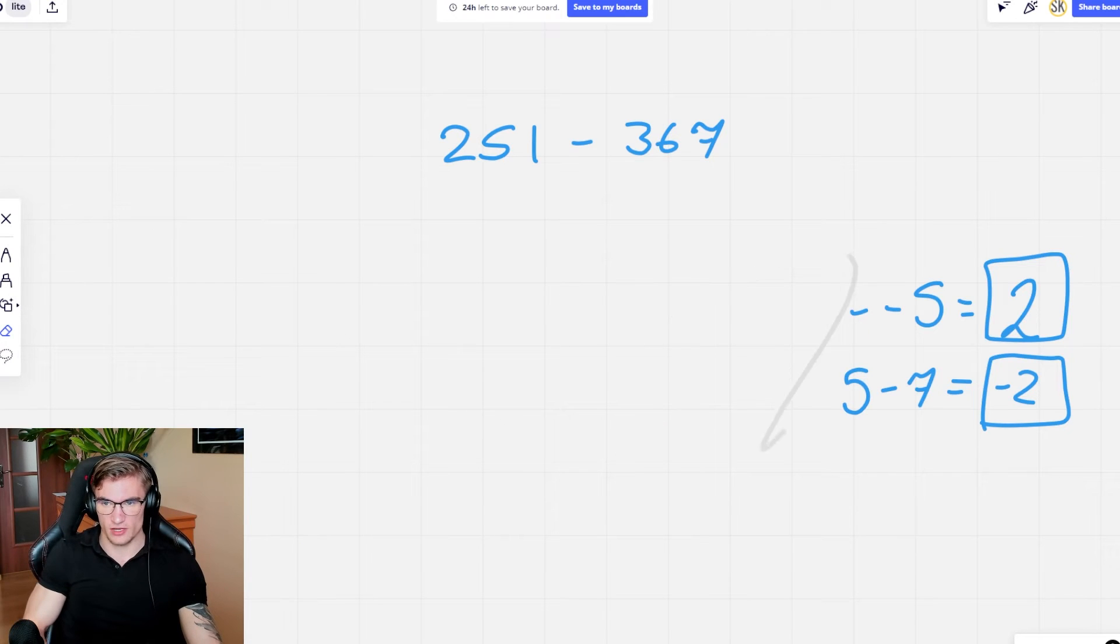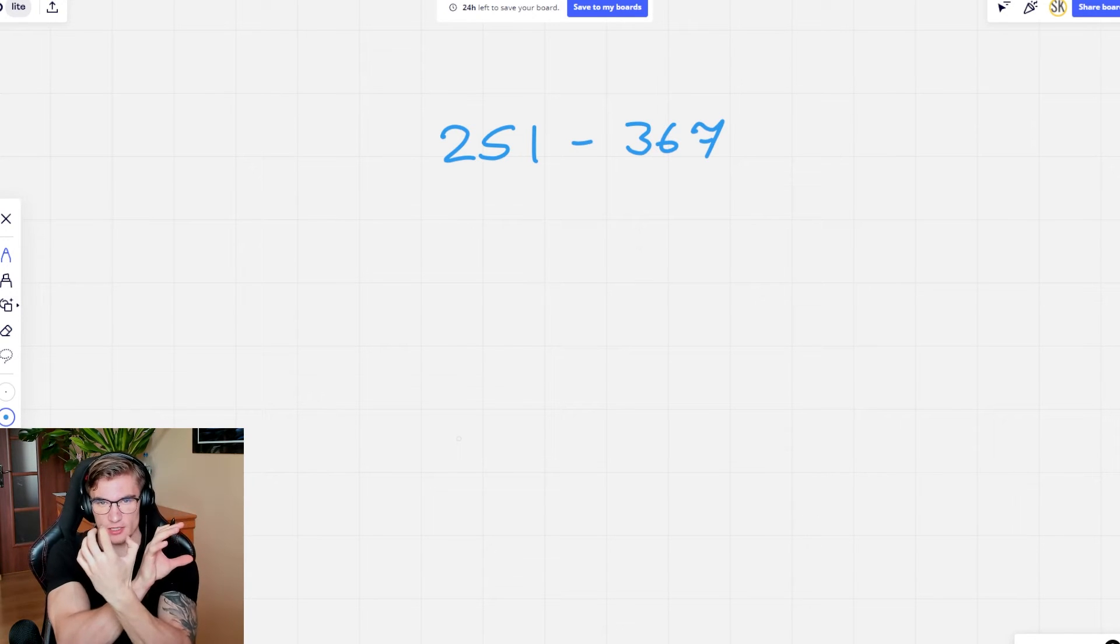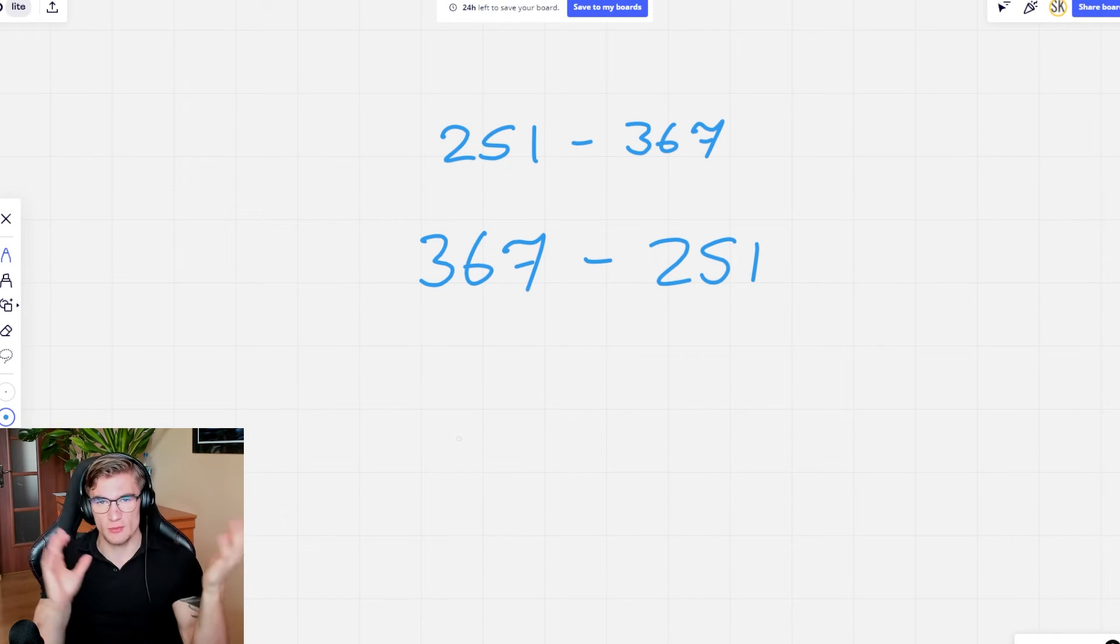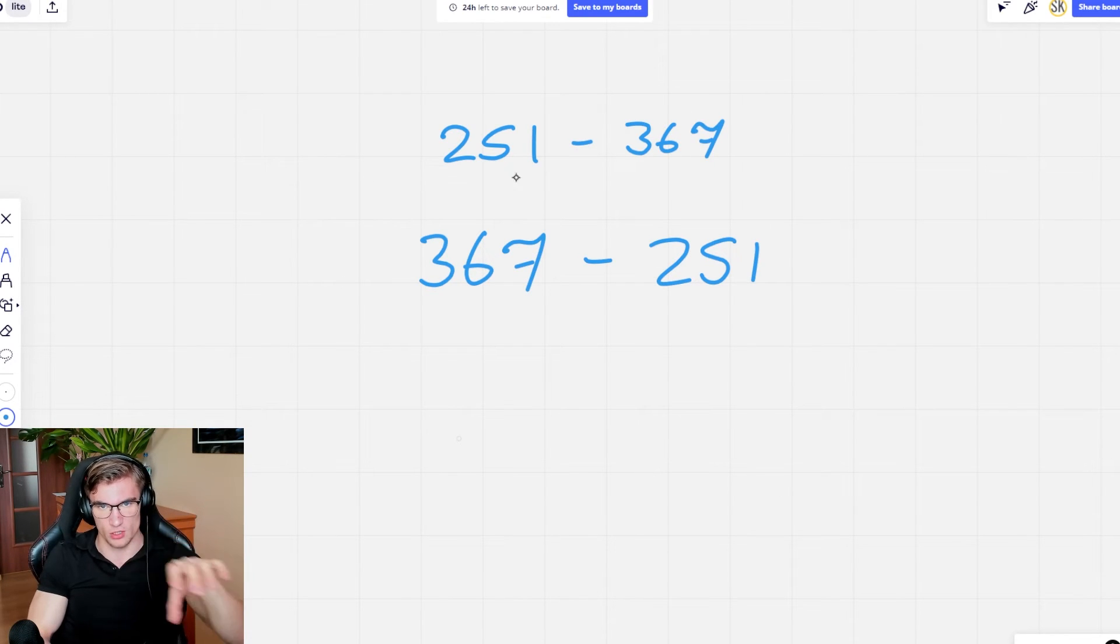That means that if I want to subtract something like that, all I have to do is flip it. So I could just do the bigger one minus the 251, because the difference is going to be the same answer. I just need to remember that originally I'm taking away the bigger number from the